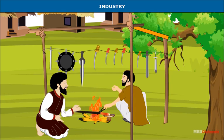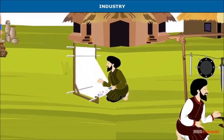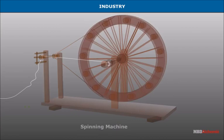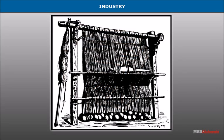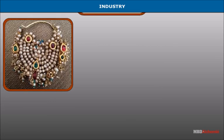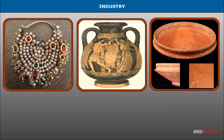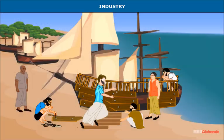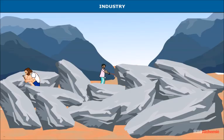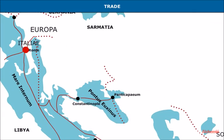The period under review saw remarkable progress in the industrial field. From the literature, inscriptions, and sculptures of the period, we have numerous references to various arts, crafts, and professions that flourished. The textile industry produced woolen and cotton fabrics. Jewelry making, ivory working, pottery, painting, furniture, and leather-based industries were quite advanced. Gold, silver, copper, and iron mines were in full production. Shipbuilding, stone cutting, and weapon making were other important industrial activities.